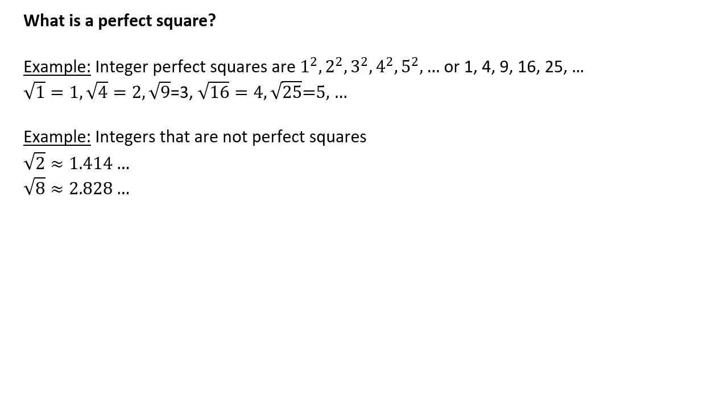If I take the square root of a perfect square, I get a nice integer back. The square root of 1 is 1, the square root of 4 is 2, the square root of 9 is 3, etc.